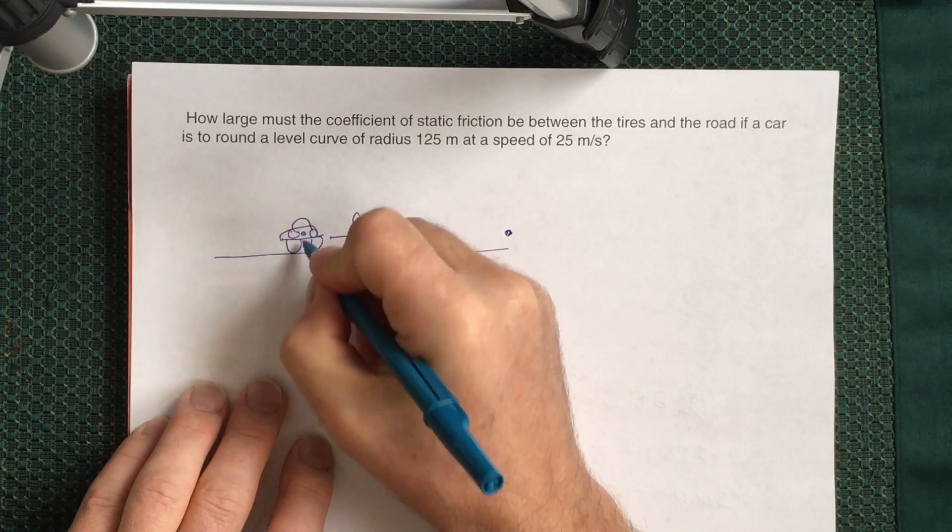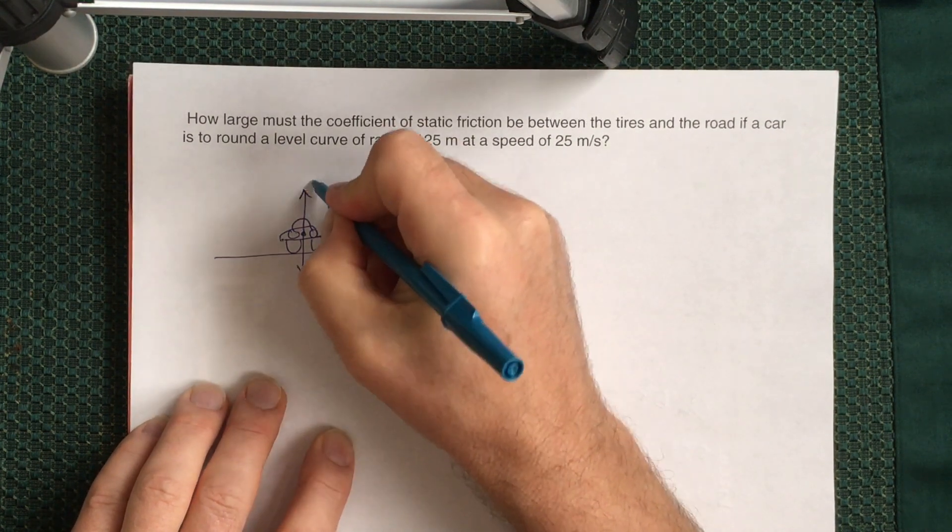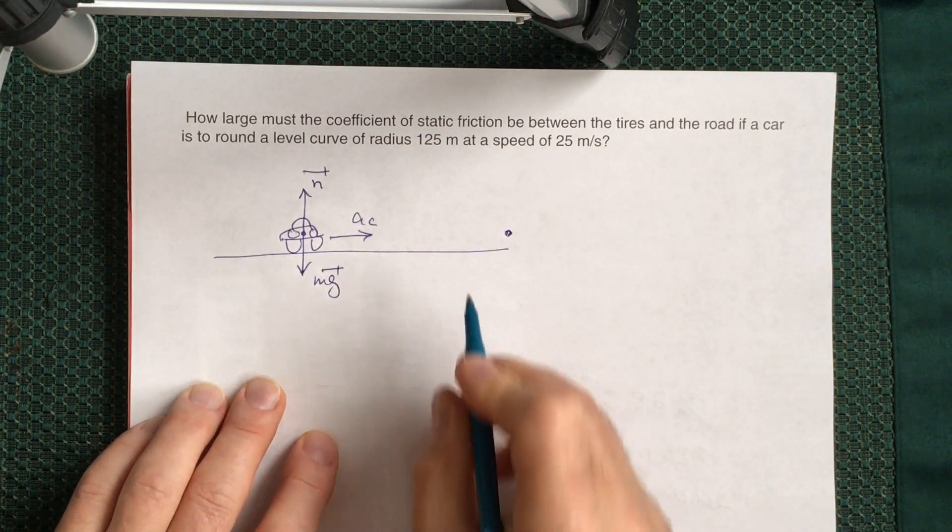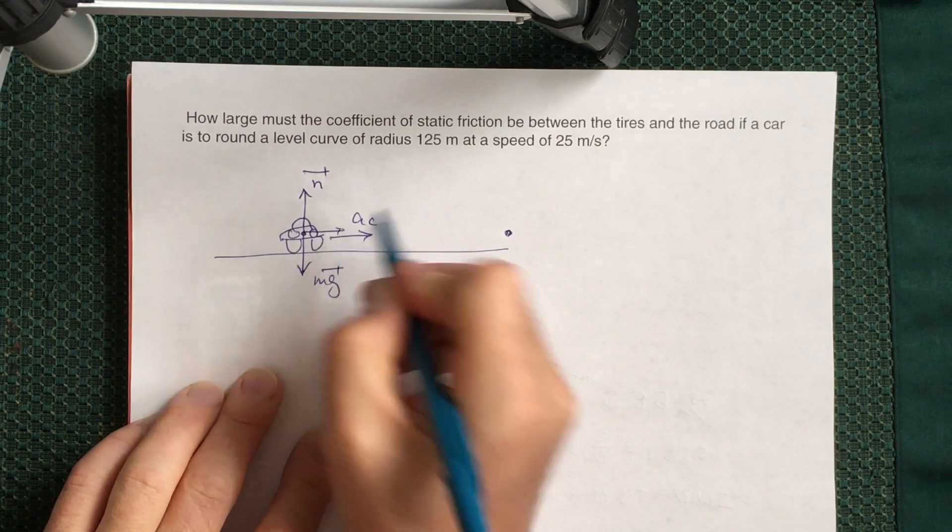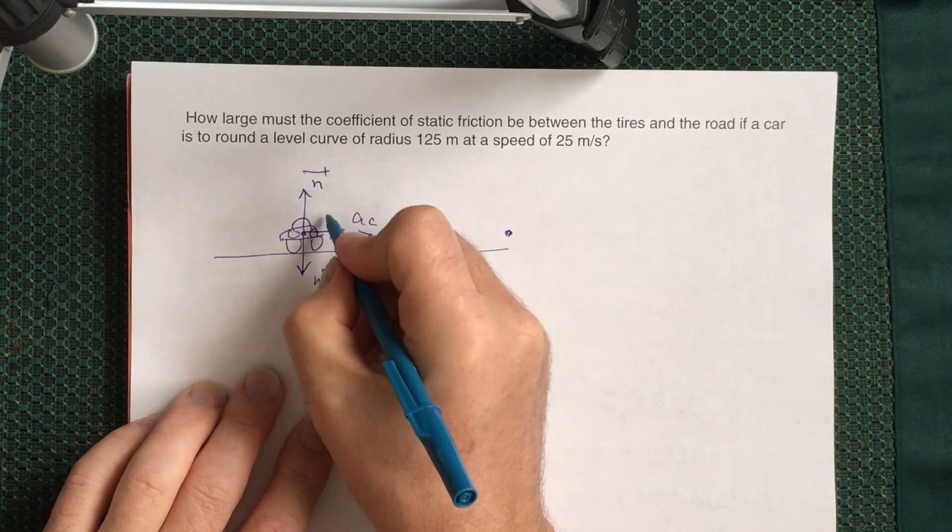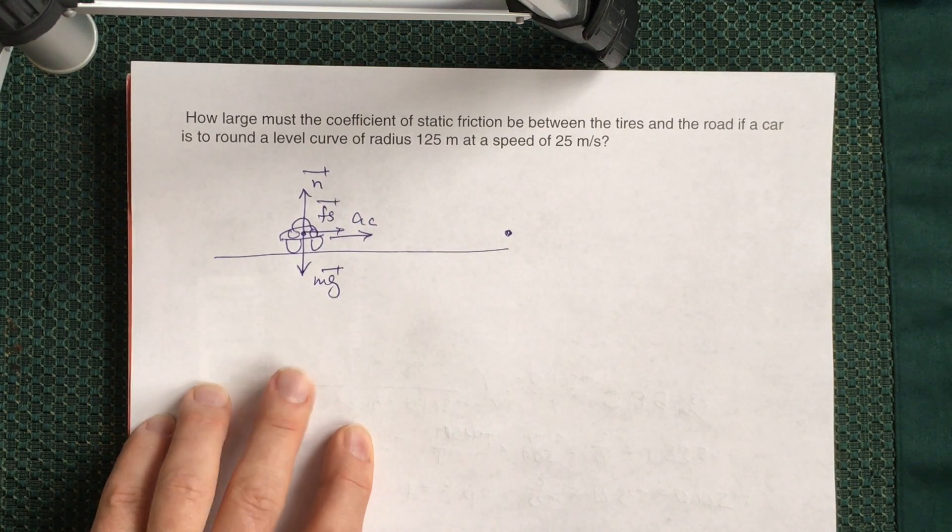Now we will show all forces acting on the car. What forces will act? We'll have mg, gravity force downward. We'll have normal force upward. And we will have static friction force. Static friction force will be directed towards the center of the circle, and this force will play the role of centripetal force.